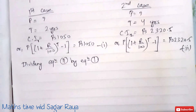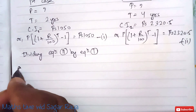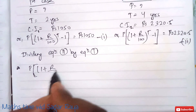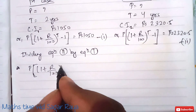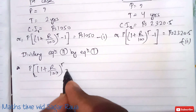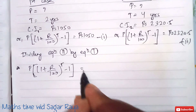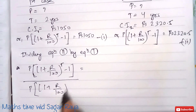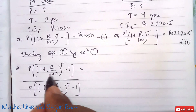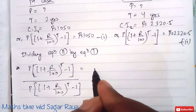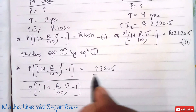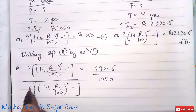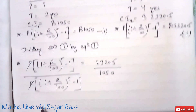Dividing equation 2 by equation 1: P times (1 plus R by 100) to the power T, minus 1, divided by P times (1 plus R by 100) to the power T, minus 1 equals 2320.5 divided by 1050. We can cancel the principal P from both numerator and denominator.